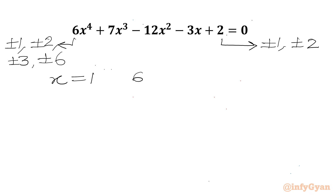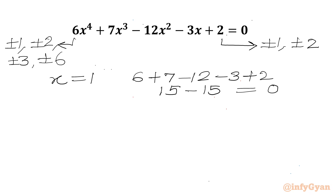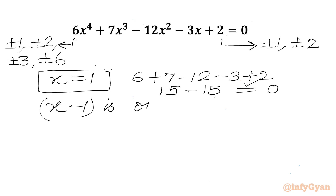Let's check: 6 + 7 − 12 − 3 + 2. So 13 + 2 is 15, minus 12 minus 3 equals 0. Yes, this satisfies our equation. So I can say x=1 is our base solution, or (x−1) is one factor of the quartic equation.